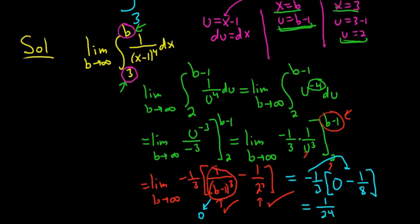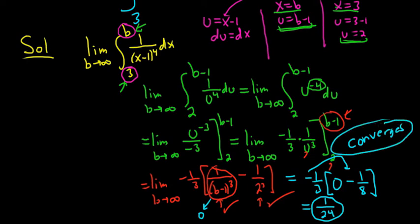So we got 1 over 24. So that would be the answer. And in this case, we would say that the integral converges because the limit exists. If the limit does not exist, then we say it diverges.